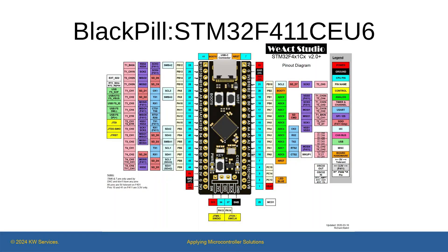The black pill is a USB stick board with 8 MB of flash using the STM32F411 chip. The chip is a 32-bit ARM Cortex M4 microcontroller with a floating point unit and operates at 100 MHz. It has interfaces for I2C, SPI, and UART, and it has at least 30 GPIO pins.